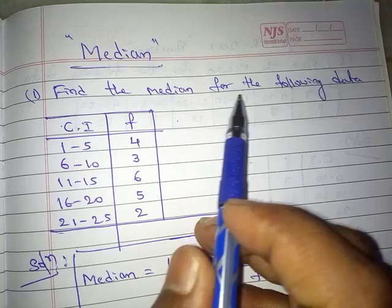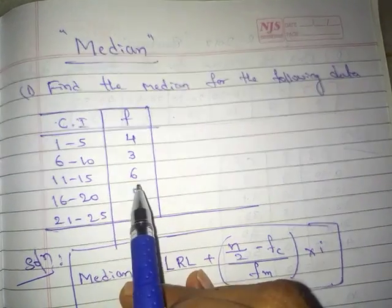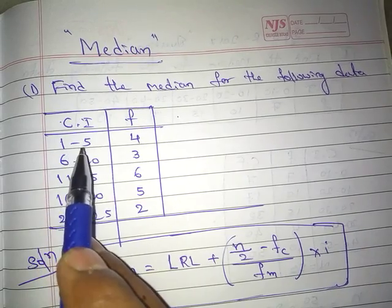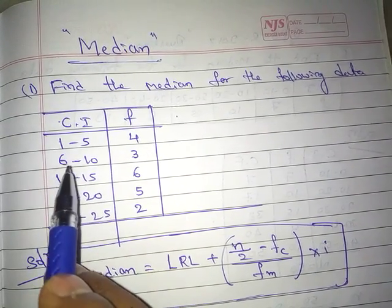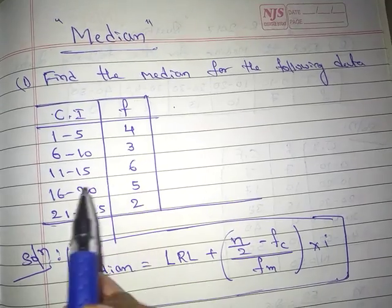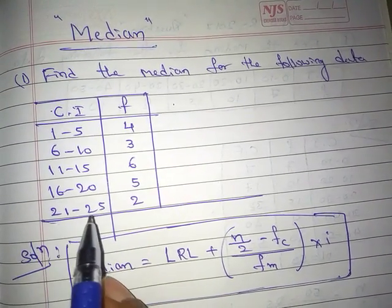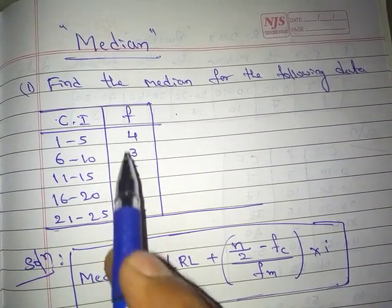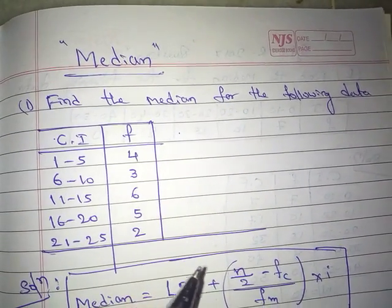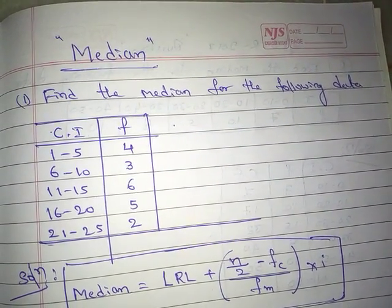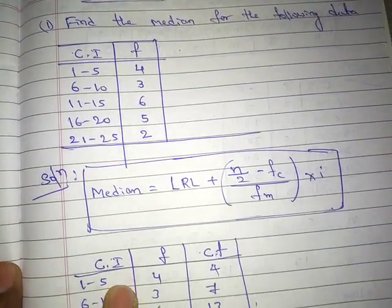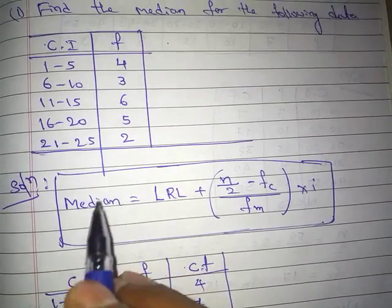Here, we find the median for the following data. They are giving one dataset with class intervals and frequencies: 1–5 with frequency 4, 6–10 with frequency 3, 11–15 with frequency 6, 16–20 with frequency 5, and 21–25 with frequency 2. Both frequency and class interval are given. Before solving this problem, we need to understand the formula.